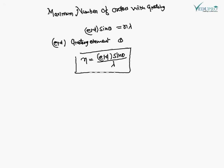The maximum possible value of the angle of diffraction is 90 degrees. Therefore, the maximum possible order is n_max = (e+d)sin90°/λ. Since sin90° = 1, this gives n_max = (e+d)/λ.